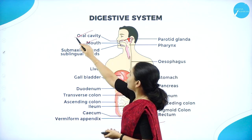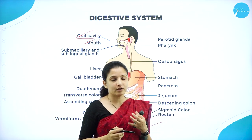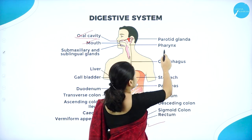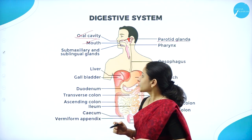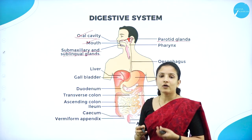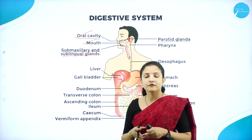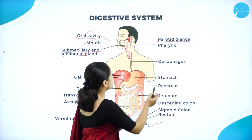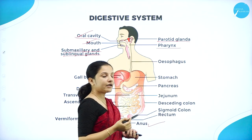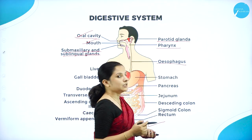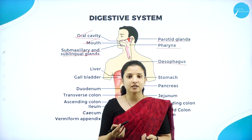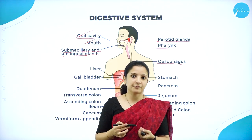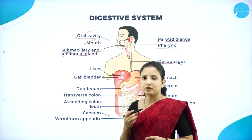The digestive system begins with the oral cavity, that is the mouth. It begins with the mouth and ends with the anus. Ingestion of food, that is the entry of food, is through the mouth, and its egestion is through the anus. In the mouth there is the oral cavity, which consists of the teeth and all that. Also present are the parotid gland, submaxillary, and sublingual glands, which help in the secretion of saliva.